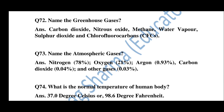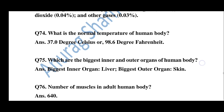Question number 72: Name the greenhouse gases — carbon dioxide, nitrogen oxide, methane, water vapor, sulfur dioxide, and chlorofluorocarbons (CFCs). Question number 73: Name the atmospheric gases — nitrogen 78%, oxygen 21%, argon 0.93%, carbon dioxide 0.04%, and other gases 0.03%.